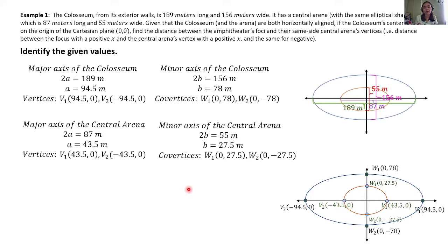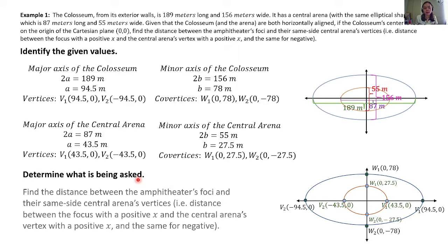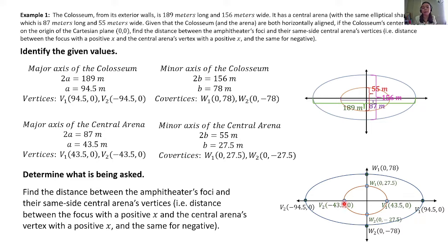Proceed na tayo doon sa ating second step. For the second step, we're going to determine what is being asked. Base dito sa problem natin, we're going to find the distance between the amphitheater's foci and their same side Central Arena's vertices. Basically, kukunin muna natin yung foci nung ating Colosseum, and then sa bawat isang focus, kukunin natin yung distance nya doon sa vertex nung ating Central Arena na nasa kapareho niyang side. For example, kapag ang consideration natin ay yung focus ng Colosseum dito sa negative side, kukunin natin yung distance nya dito sa vertex ng Central Arena dito sa negative side din.